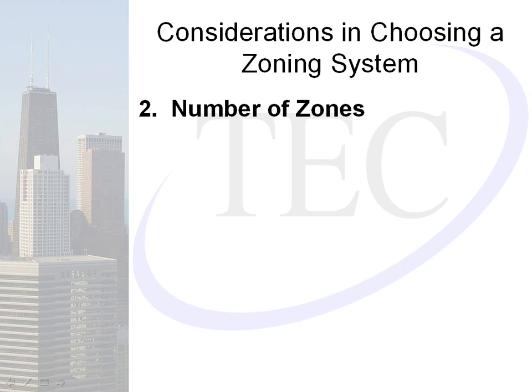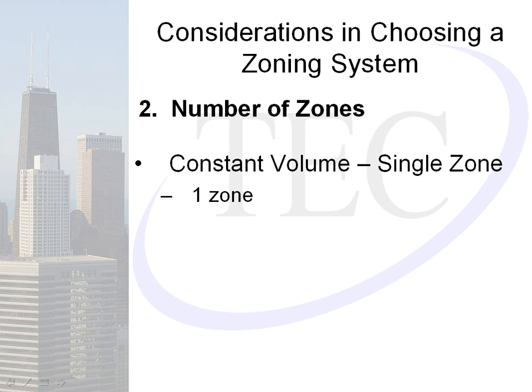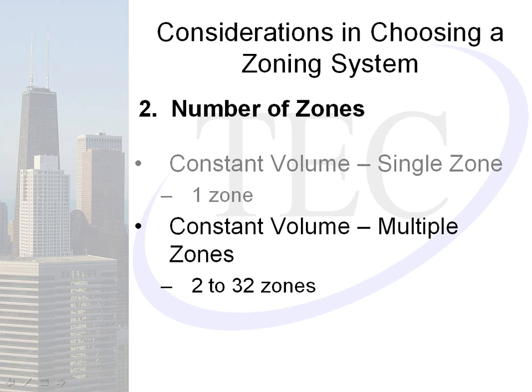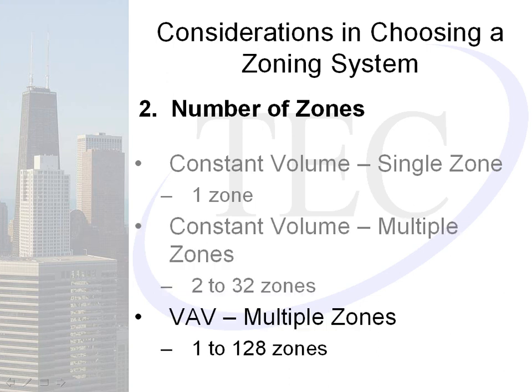The second consideration is the number of zones. Constant volume single zone is only one zone — one thermostat, one source of control. Constant volume multiple zones can be anywhere from two zones up to thirty-two zones, though typically twelve zones or under. VAV multiple zone would be anywhere from two to one hundred twenty-eight zones. There is a new rooftop unit — the new PD — that provides single zone VAV as well.